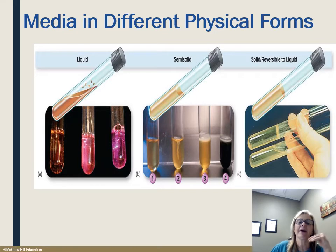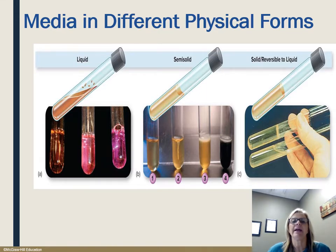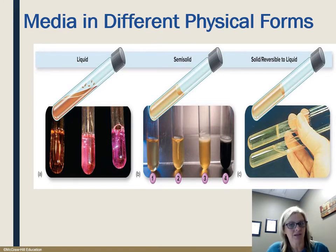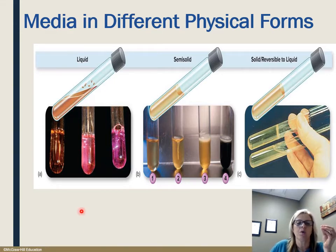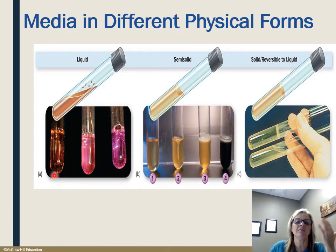Here are some examples of these different types of media: liquid, semi-solid, and solid reversible to liquid. In liquid, you can see growth as cloudy or sometimes flakes that settle to the bottom — a precipitate. These tubes on the left have urea broth, and their purpose is to see if the enzyme can digest urea. When it does, it releases ammonium, which is related to ammonia (NH3 versus NH4+), and that changes the pH of the broth, causing it to become more pink. The first tube is un-inoculated, the middle is a weak positive, and the right is a strong positive. A negative result would show no color change.